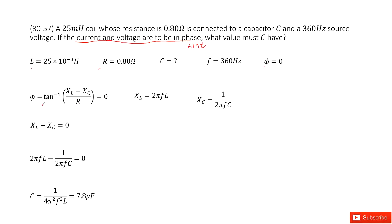So we can write down the equation about the phase shift φ equal to zero. We can see this is arctangent of X_L minus X_C divided by R should equal to zero. So that means X_L minus X_C equals zero.